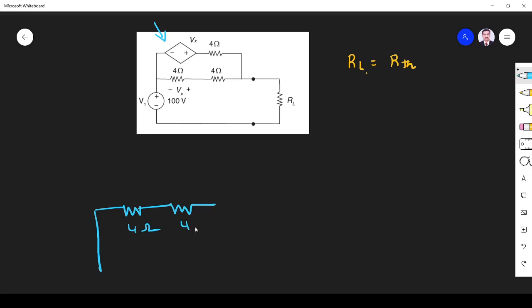So 4 ohm, 4 ohm. And replace RL with 1 volt voltage source. And dependent source we should not remove. This will be as it is. And this is 4 ohm.